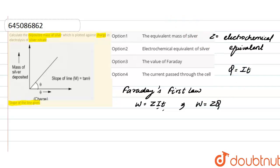Now the graph is plotted between mass of silver deposited and charge. According to the equation of a graph, Y equals MX plus C. Here we have the equation: weight deposited equals Z into Q. On the Y axis we have mass deposited, and on the X axis we have charge. The slope here is Z, where Z equals electrochemical equivalent.